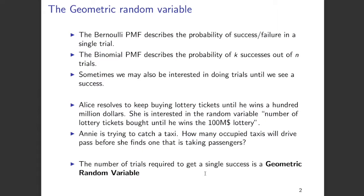For example, Alice is interested in buying lottery tickets and she wants to know how many lottery tickets, or what is the expected number of lottery tickets she needs to buy before she wins the 100 million dollar lottery. So the number of trials required to get a success is what a geometric random variable captures.